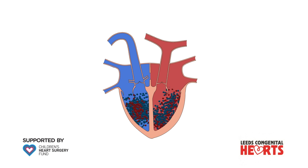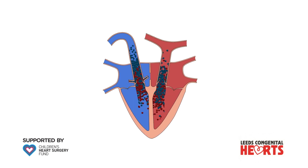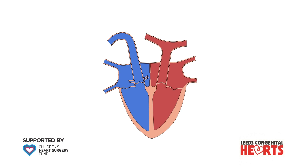By improving the delivery of blood to the body, this procedure buys some time until a corrective operation can be performed. Although not illustrated here, oxygenated blood can also pass between the aorta and pulmonary artery through a small connection called the ductus arteriosus. The ductus arteriosus is open when a baby is in the womb, but usually closes shortly after birth. A baby with transposition of the great arteries might be given a drug to keep the ductus arteriosus open until a balloon atrial septostomy or a correction operation are performed.